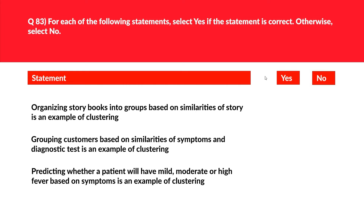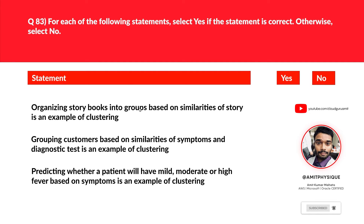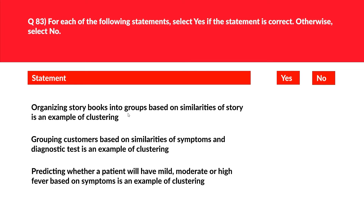We need to select the correct statement and mark it yes or no. Statement 1 says organizing storybooks into groups based on similarities of stories is an example of clustering. There are two potential answers — clustering and classification — but since we need to group based on similarities, clustering is correct. We will mark this as yes.